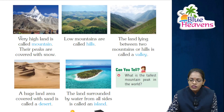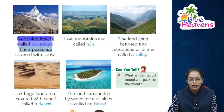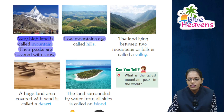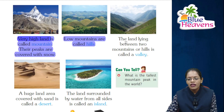Next is mountain. Very high land is called a mountain. Their peaks are covered with snow. Next are hills — low mountains are called hills. Hills are smaller in size than mountains.